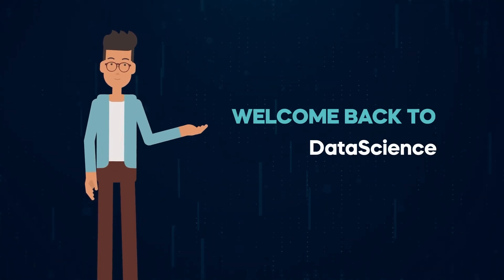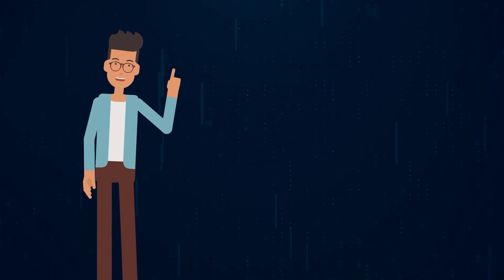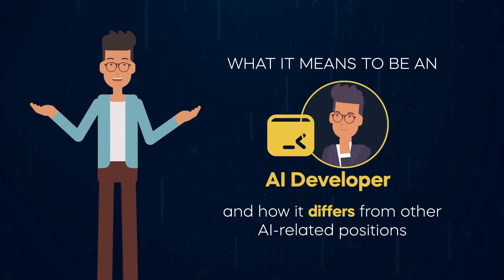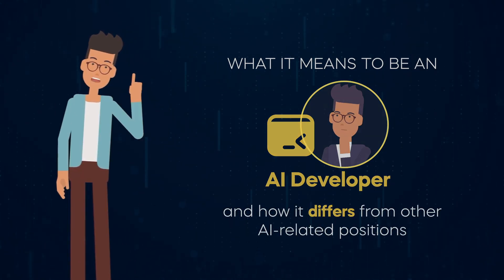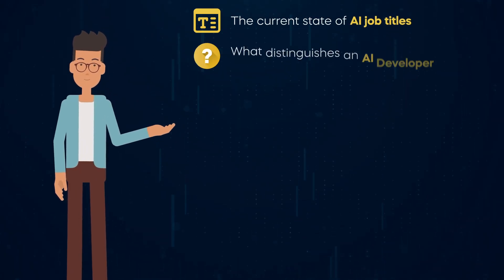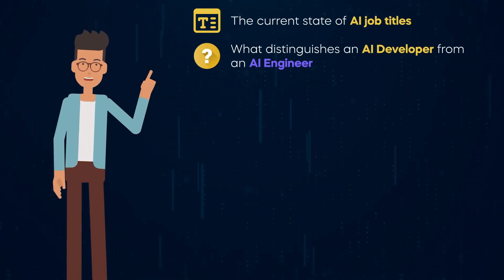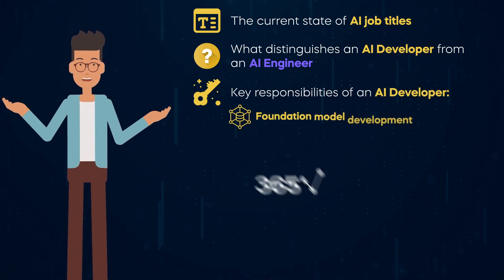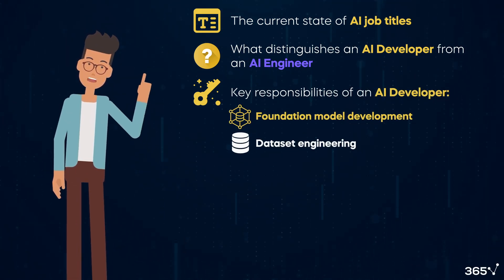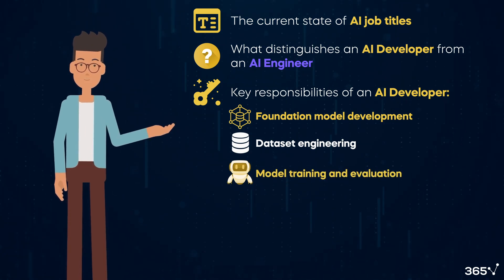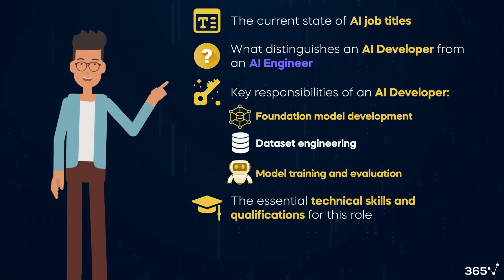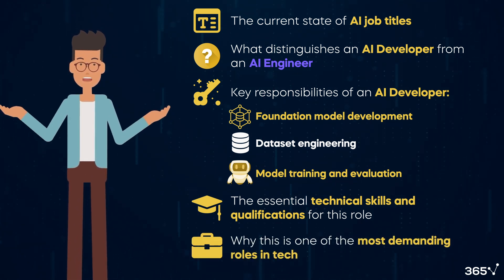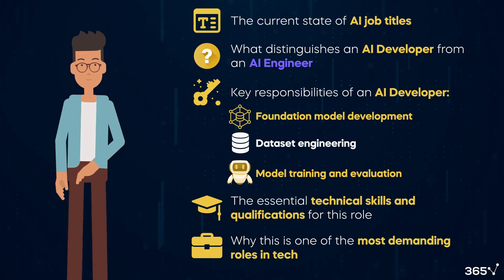Hi there and welcome back to 365 Data Science. In today's video we'll explore what it means to be an AI developer and how this role differs from other AI-related positions. We'll cover the current state of AI job titles, what distinguishes an AI developer from an AI engineer, key responsibilities including foundation model development, dataset engineering, and model training and evaluation. Then we'll cover the essential technical skills and qualifications for this role, and finally why this is one of the most demanding roles in tech.